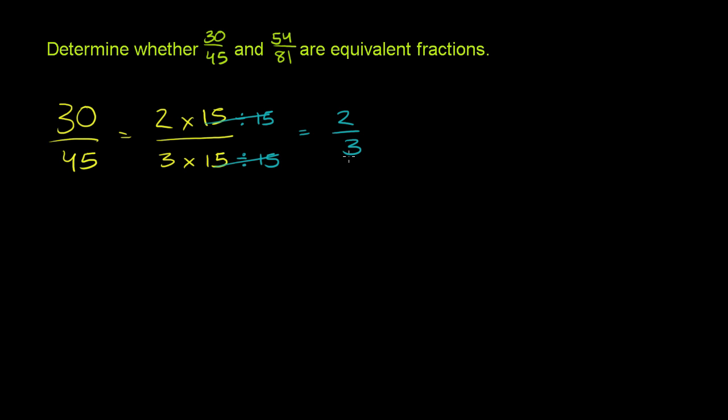2/3 is in the lowest possible terms, or simplified form, however you want to think about it. Now let's think about 54. Let's try to do 54 over 81.